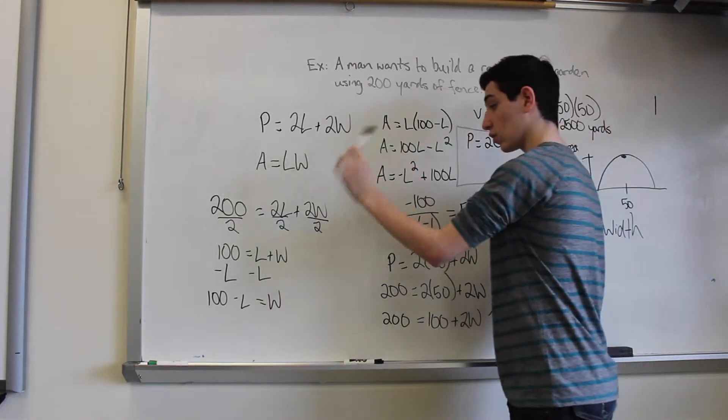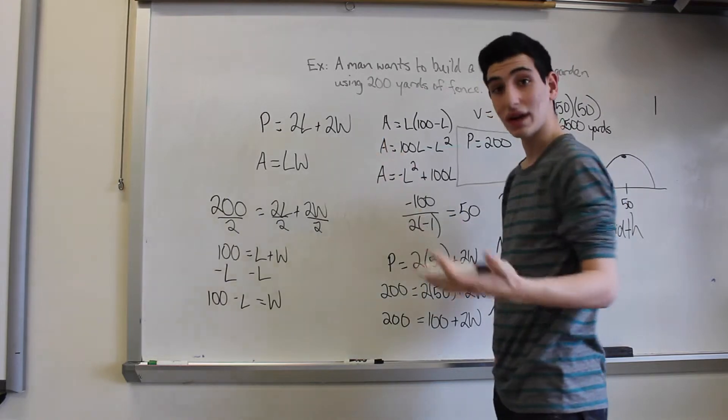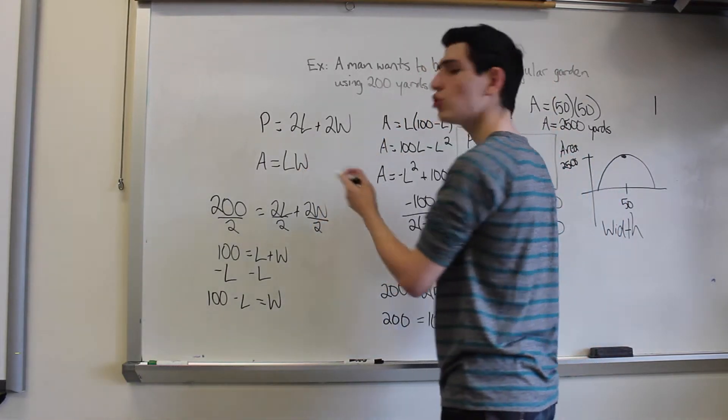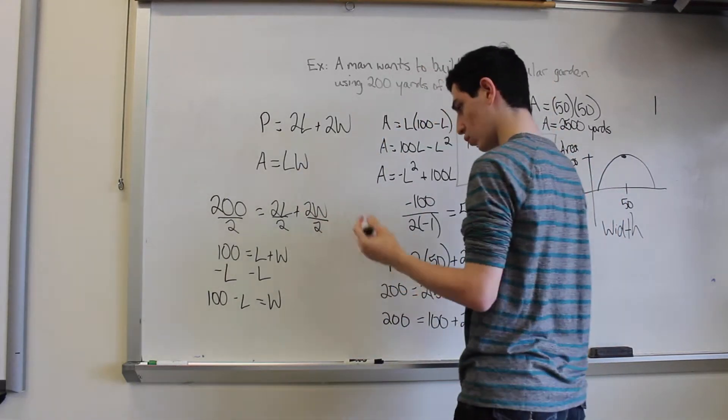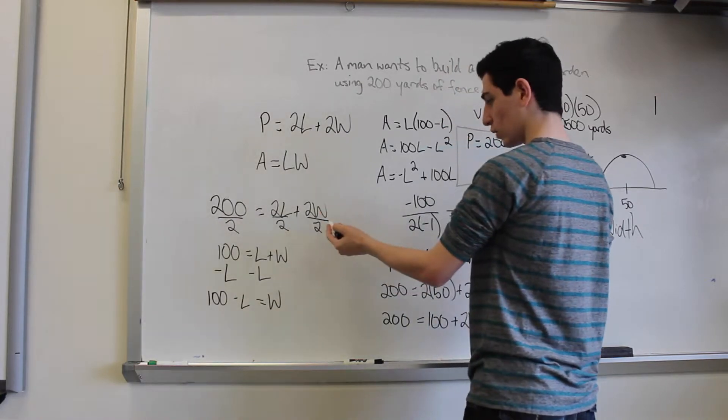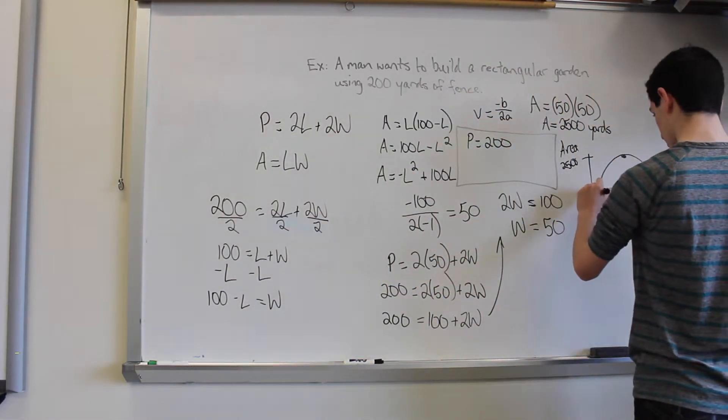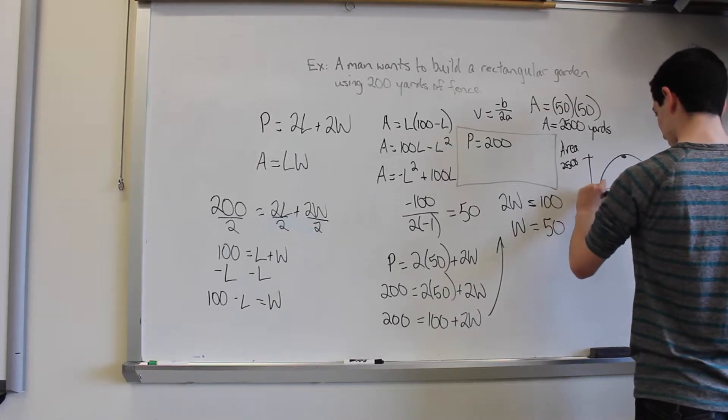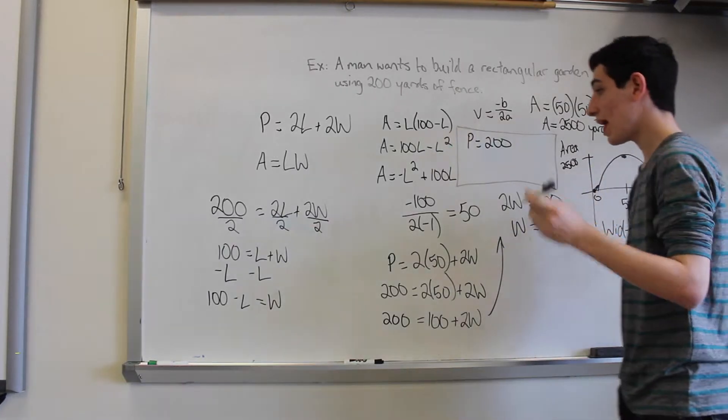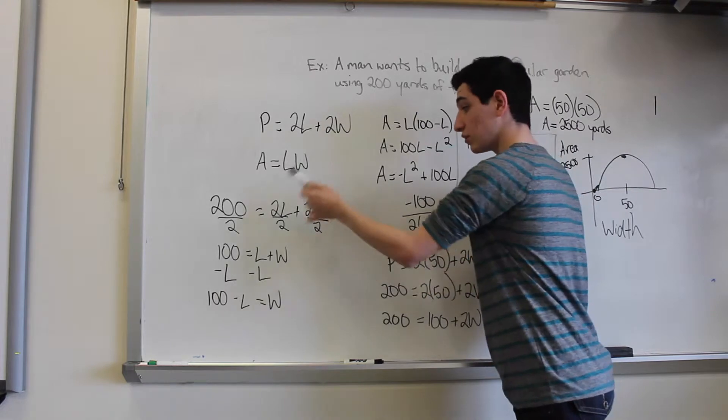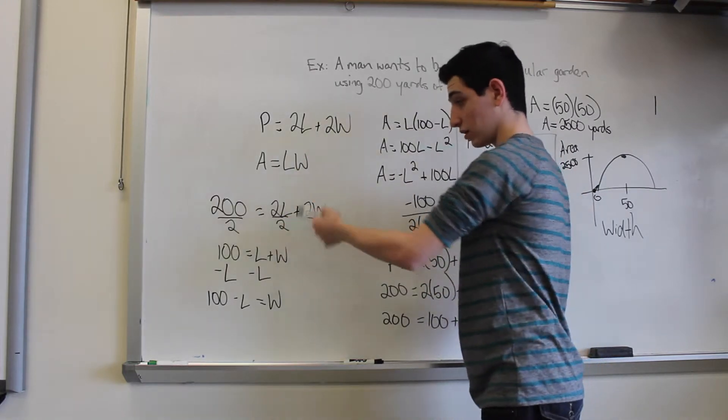Because if we go back to our original equation, you could either have, when x is 0, you could make either the length or the width 0. So if we make our width 0, well that's easy because we just have it as 0 right here. And in that case, 2L will equal 200, L equals 100.